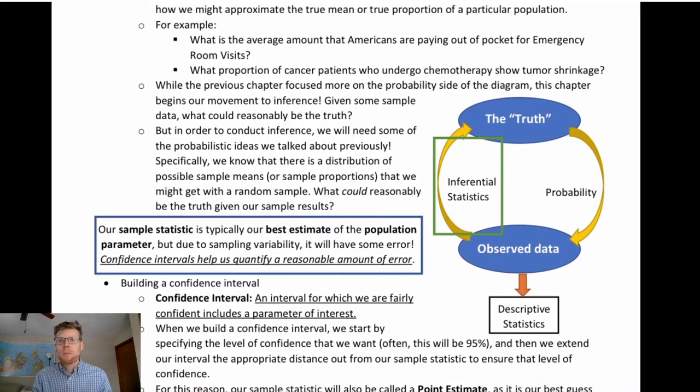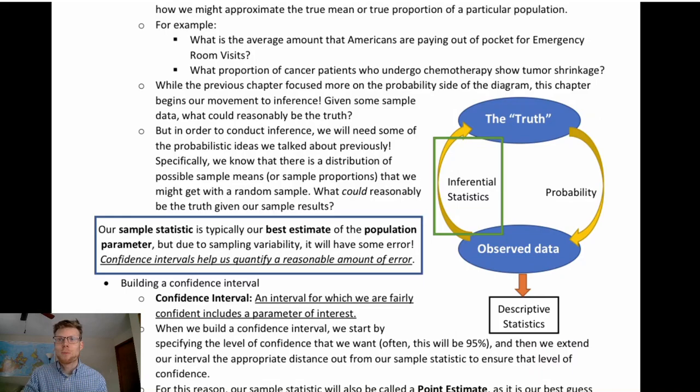As a reminder from the previous chapter, our sample statistic is typically going to be our best estimate of a population parameter. We did talk a bit about bias versus unbiased statistics. In general, a statistic is going to be our best estimate for the parameter it represents. A sample mean is our best estimate for a population mean, and a sample proportion is our best estimate for a population proportion.